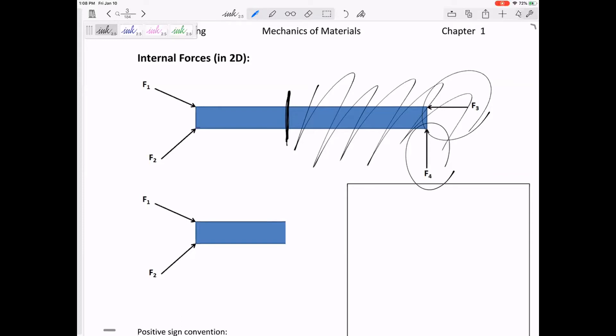I don't know if you did this in statics, but we can have N, V, and a moment M—three unknowns at a 2D cut. We're going to draw the N in tension. N is perpendicular to the cut. N is a normal force; normal means perpendicular.